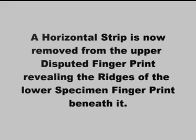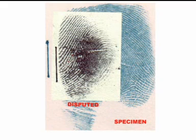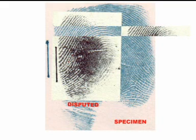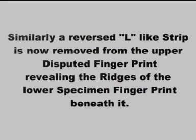A horizontal strip is now removed from the upper disputed fingerprint, revealing the ridges of the lower specimen fingerprint beneath it. Similarly, a reversed L-like strip is now removed from the upper disputed fingerprint, revealing the ridges of the lower specimen fingerprint beneath it.